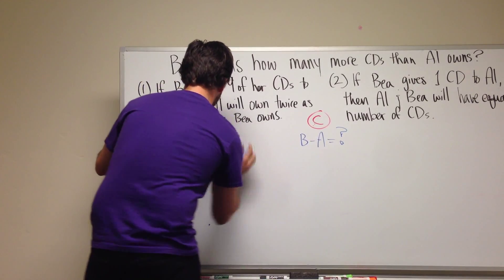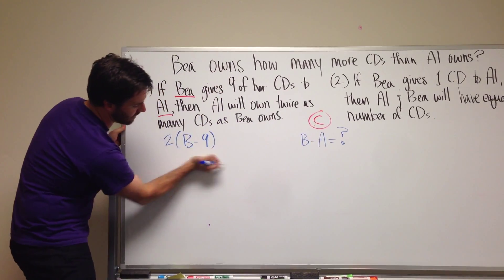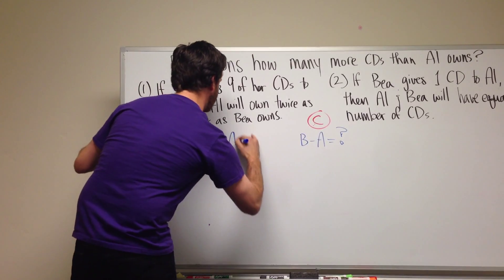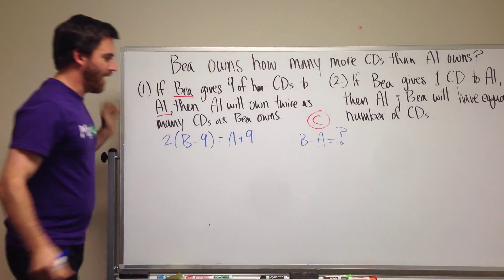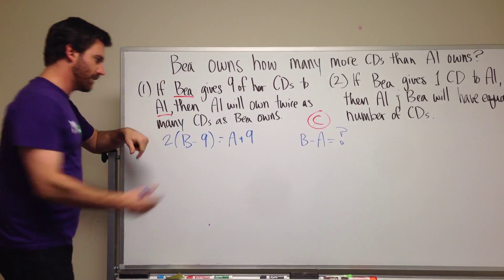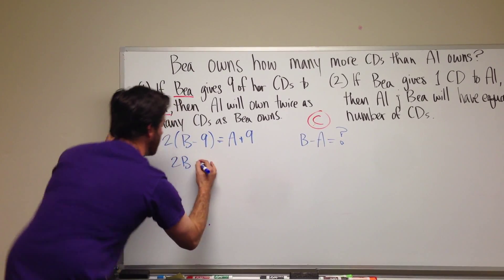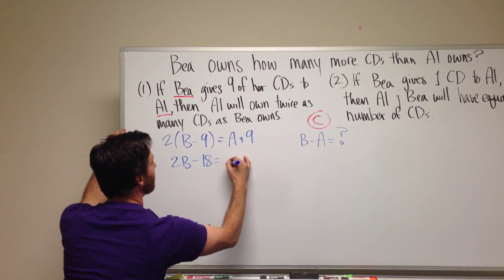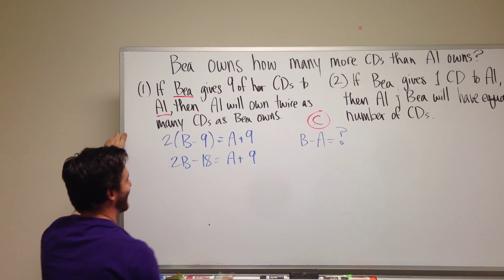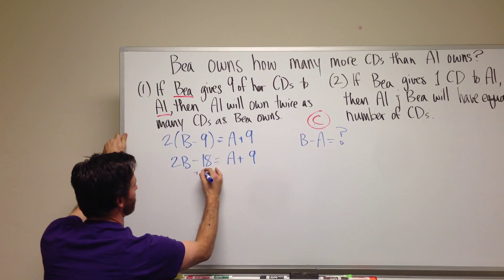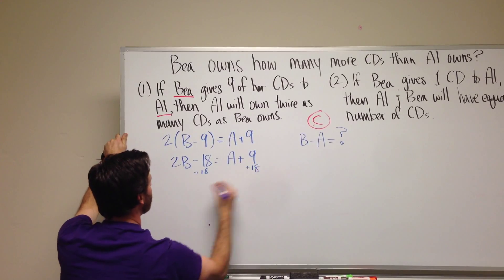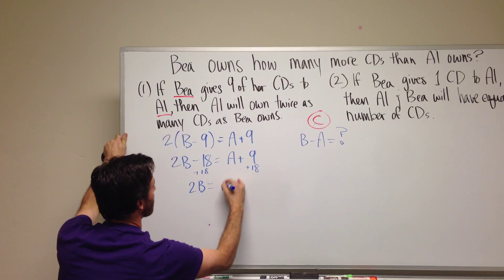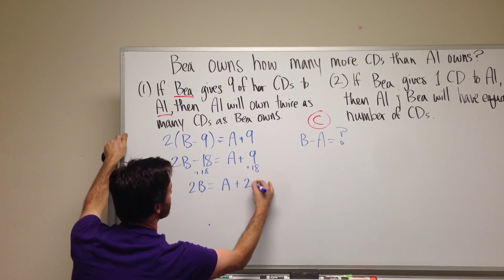It says Al will own twice as many CDs as B. So that means we'd have to multiply B by two in order for it to equal what Al has. Let me just erase this here and put it right here. And then we have A plus nine. So we can work this problem a little bit. We get 2B minus 18 equals A plus nine. And then let's move our 18 over. So then we have 2B equals A plus 27.